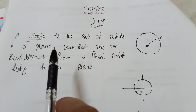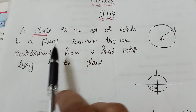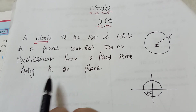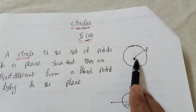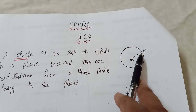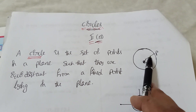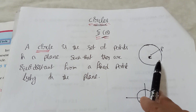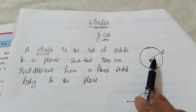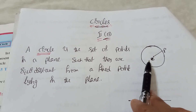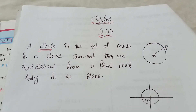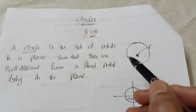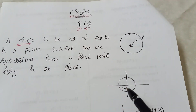Now come to the point — circle. You know what the definition of a circle is. A circle is the set of points in a plane such that they are equidistant from a fixed point lying in the plane. The center of the circle — any point on the circle is at this fixed distance, equidistant from the fixed point. That is called a circle.